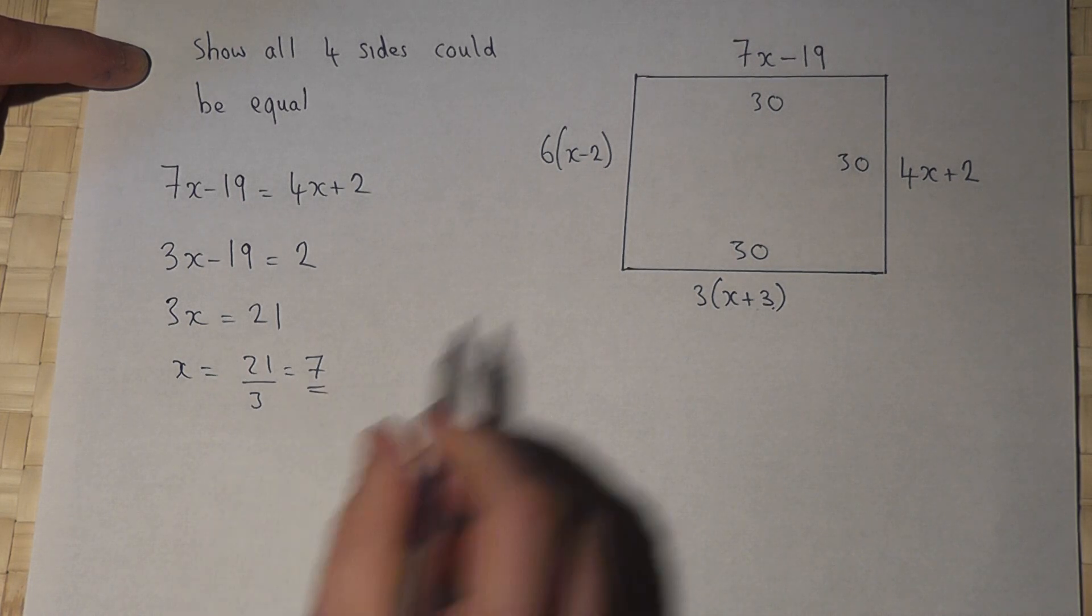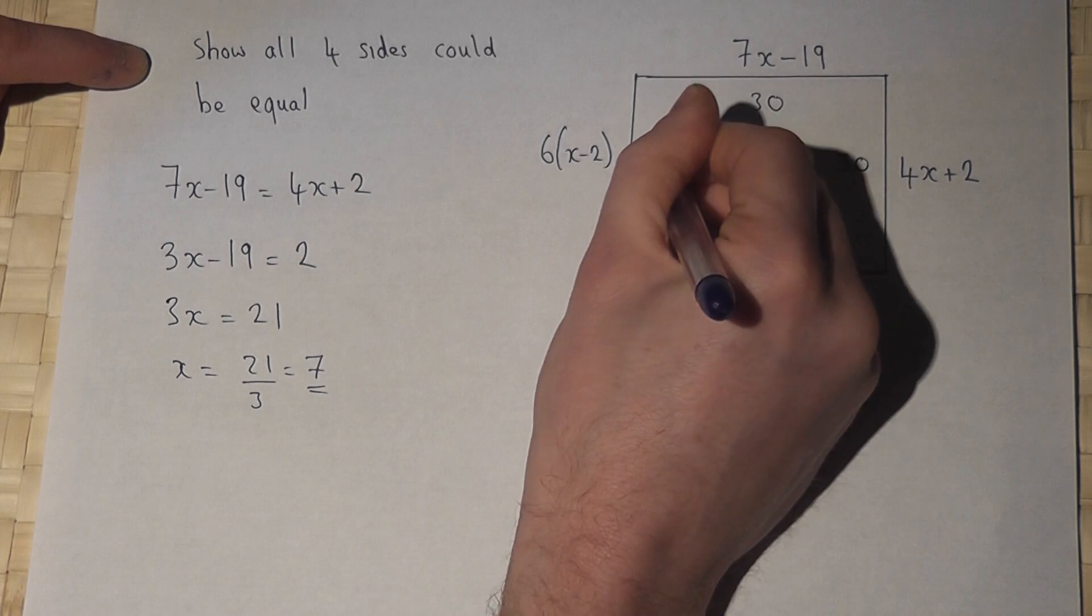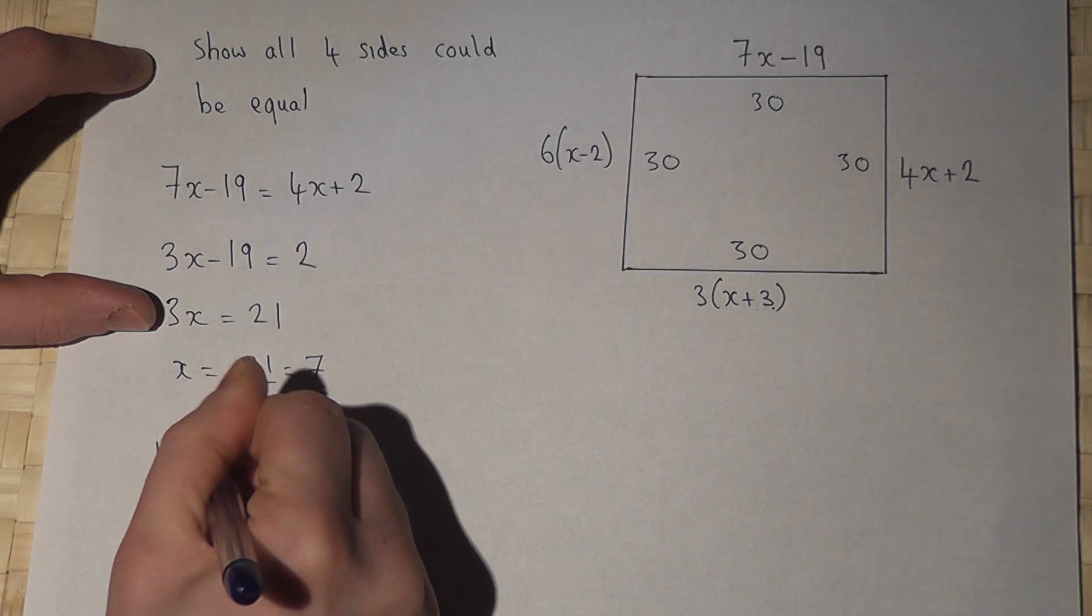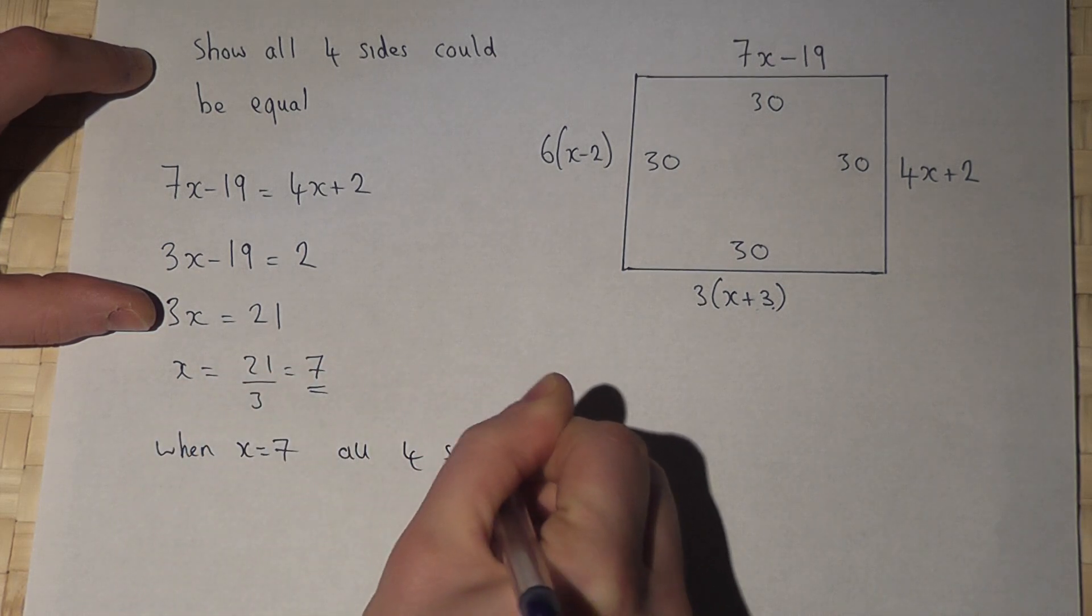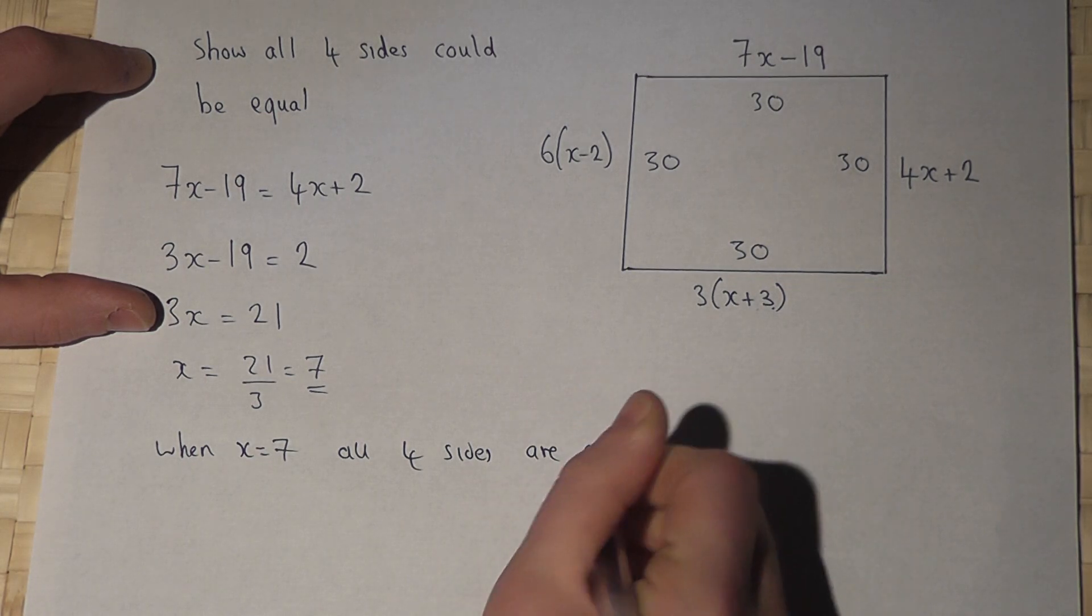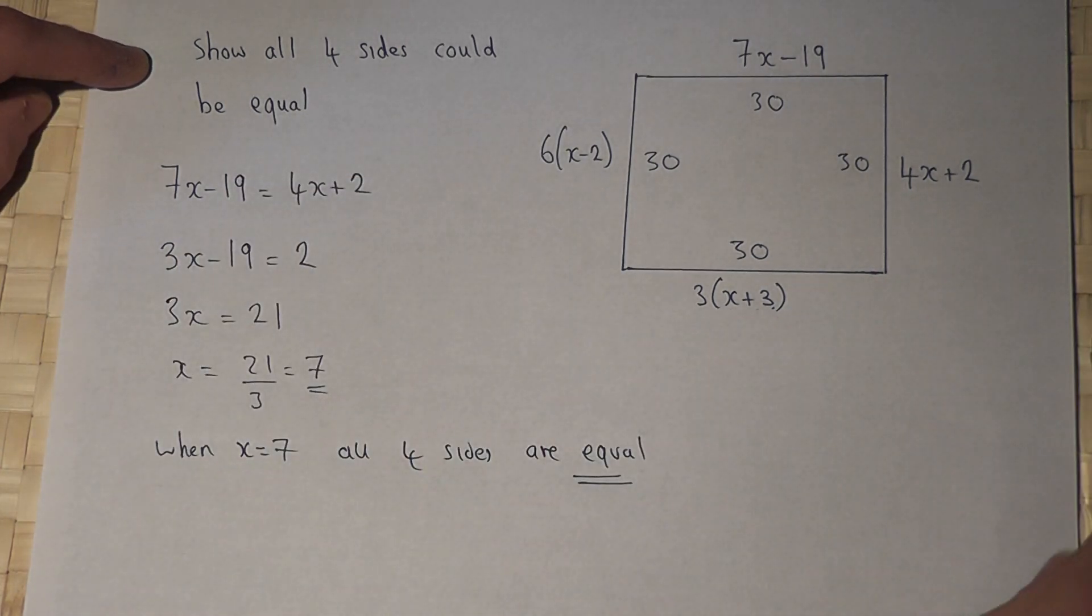And when x is 7, 7 times 2 is 5, and 6 times 5 is 30. So I've shown that when x equals 7, all four sides are equal. So the answer is yes, all four sides can be equal when x equals 7.